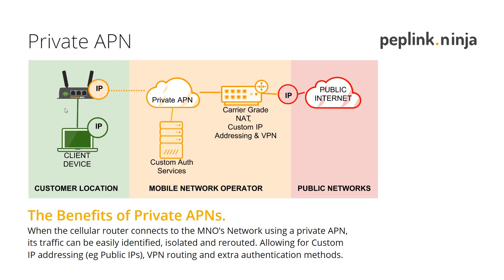This is what a private APN looks like — slightly different. Same scenario: SIM card goes into your router or smartphone, but instead of using public APN settings you put in a private APN. As soon as you do that, you're allowing the mobile network operator to identify the source of the traffic and do something different with it. It's a bit like VLANing traffic — picture a wireless access point with multiple SSIDs, each with their own name and password. By having a private APN you've effectively got a private SSID that your router is connecting to, and because your devices are connecting to that private APN you can subsequently identify that traffic and do useful things with it.